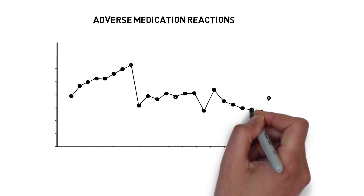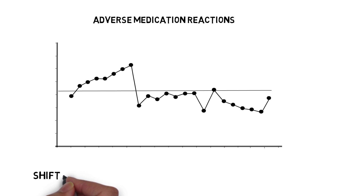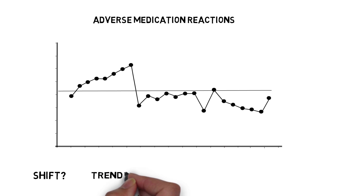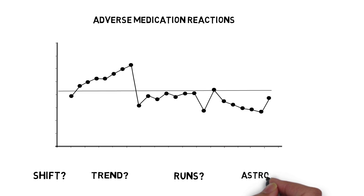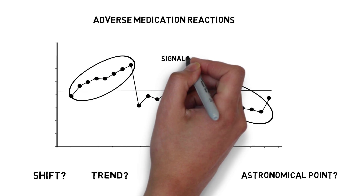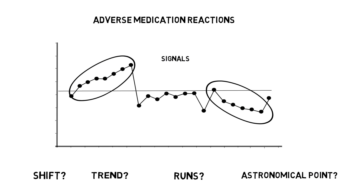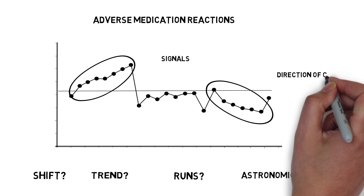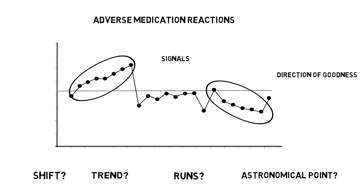When working with run charts, as long as enough data is available, all four rules should be applied to each chart. However, if just one of the rules applies to the data in the chart, it is said that a signal has occurred. The signal is evidence of a non-random change, but it does not necessarily mean that an improvement has occurred. Once a signal is identified, it provides evidence of improvement if it is in the desired direction, sometimes referred to as the direction of goodness.